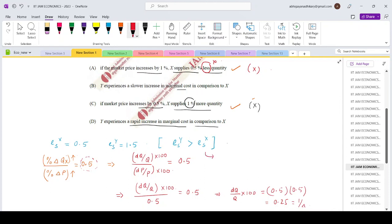So that means if the price changes by 1%, then the percentage change in quantity of firm Y is greater than the percentage change in quantity for firm X. Firm Y is more responsive to any price changes in comparison to firm X.